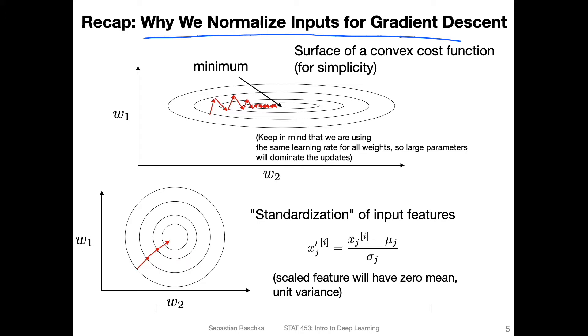So suppose for simplicity, we have here shown a surface plot of a convex loss function. Usually, when we work with deep neural networks, that's not the case, that's not a convex function anymore. But just for simplicity, assume here it's convex.